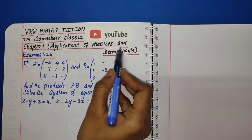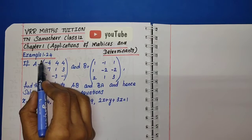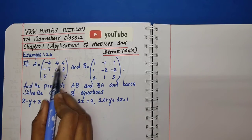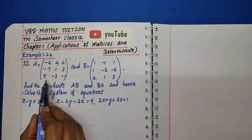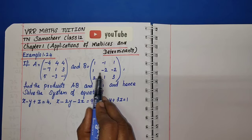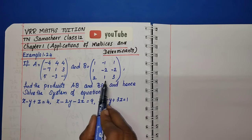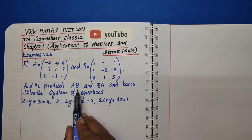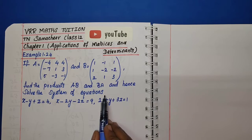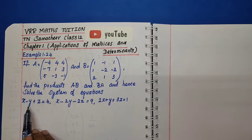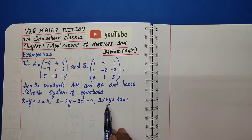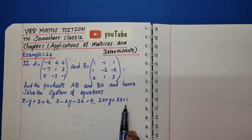Chapter 1: Applications of Matrices and Determinants. Example 1.24: If A equals minus 4, 4, 4, minus 7, 1, 3, 5, minus 3, minus 1 and B equals 1, minus 1, 1, 1, minus 2, minus 2, 2, 1, 3 — find the products AB and BA, and hence solve the system of equations: x minus y plus z equals 4, x minus 2y minus 2z equals 9, and 2x plus y plus 3z equals 1.